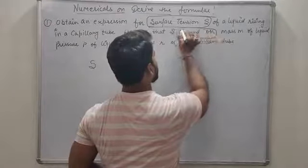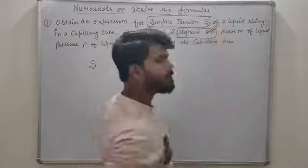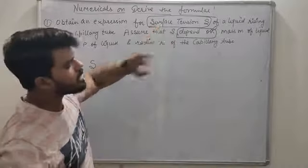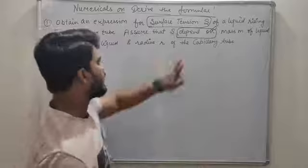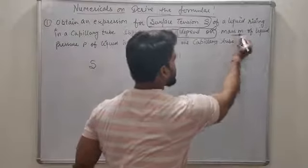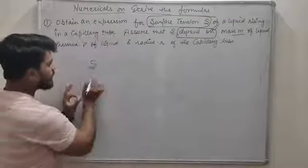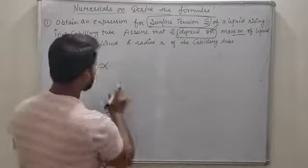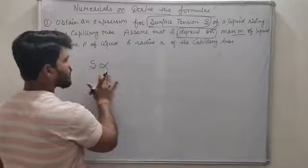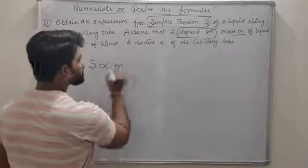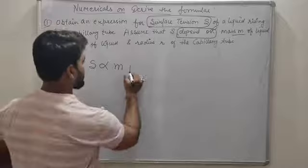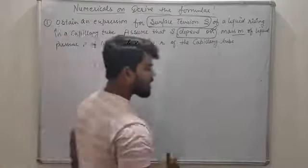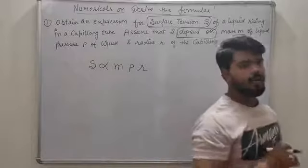यह word सबसे ज़्यादा important मानता हूँ — 'depend on' का मतलब है कि जो physical quantity हमें find out करनी होती है, वो किन-किन factors के ऊपर depend करती है। Depend on mass — तो उसको आप इस तरीके से लिखोगे। S proportion to mass M, pressure P, and radius R.